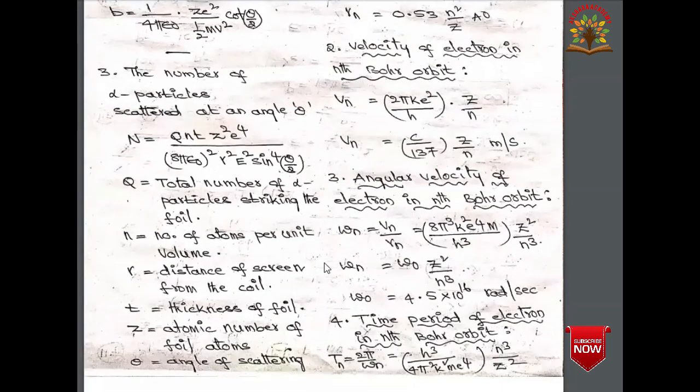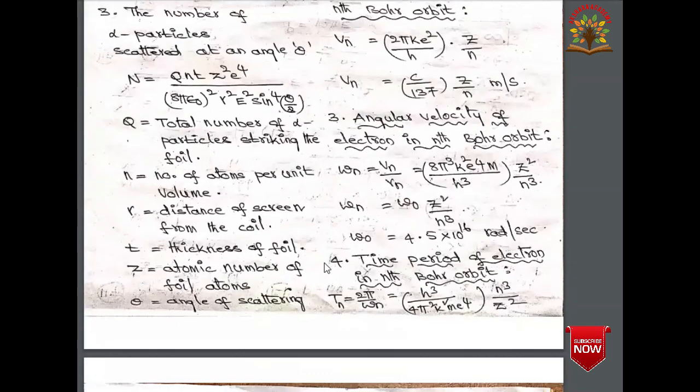The velocity of an electron in the nth Bohr orbit is given by v_n = 2πke²/h × Z/n, or v_n = (c/137) × Z/n meters per second.